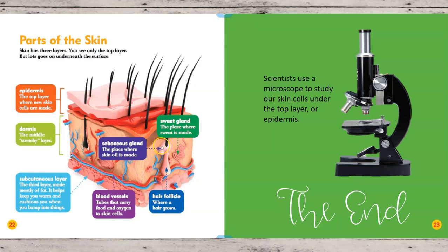How do we know what this looks like? Scientists use tools like a microscope to study our skin cells under the top layer, or the epidermis, and they also use other scientific tools to find the answers they need. That is the end of our book — now you're going to go to your template, watch at least two of the SciShow Kids videos, and finish up your research. I can't wait to see what you found out about skin. Have a great day, bye-bye.